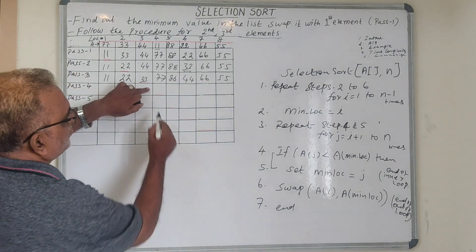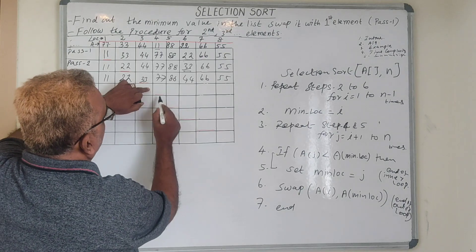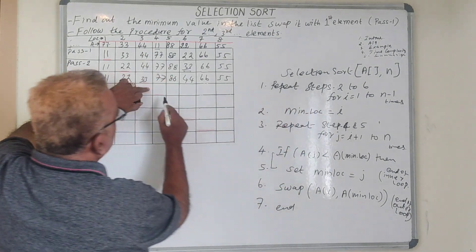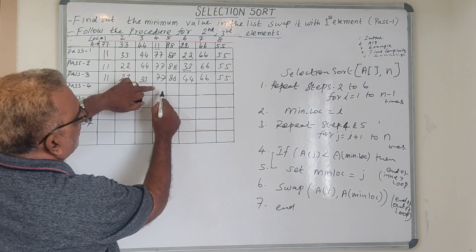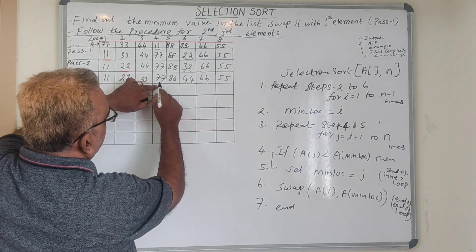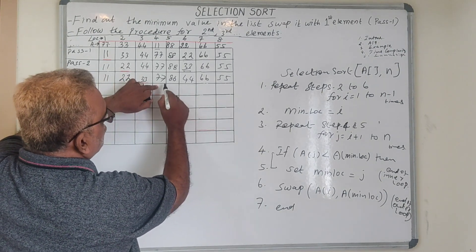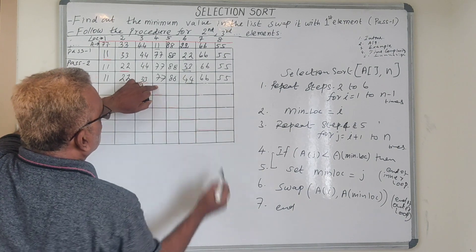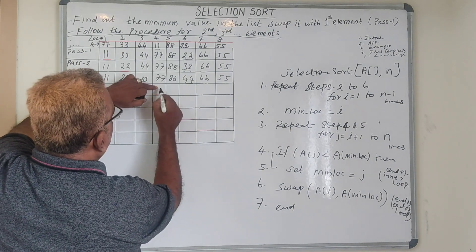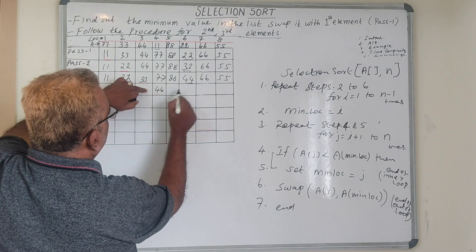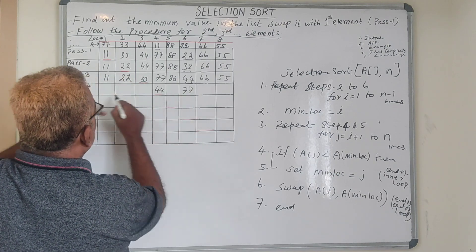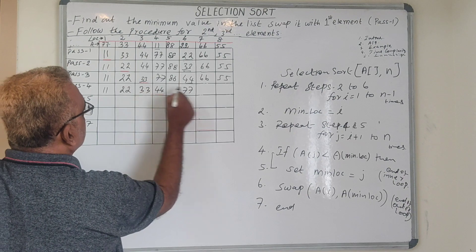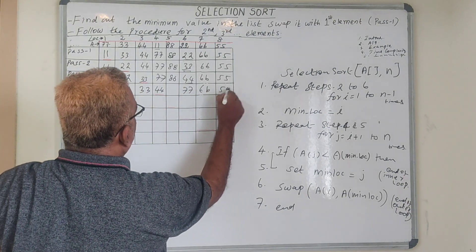Now for the fourth element, i equals 4. We check from the fourth element and the minimum value is 44. So 44 comes here and 77 goes there. The remaining values are as they are: 66 and 55.